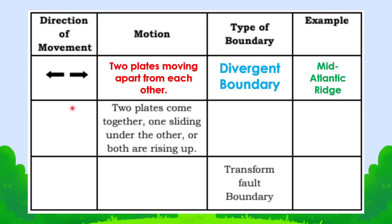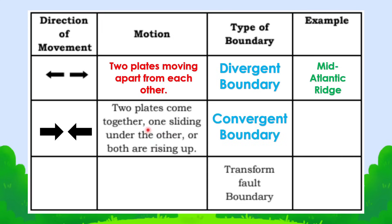Now let's have the second row. Two plates come together, one sliding under the other or both rising up. The direction of movement is toward each other, and it is called convergent boundary. An example of this is the Himalayas, where the Indian plate is colliding with the Eurasian plate.